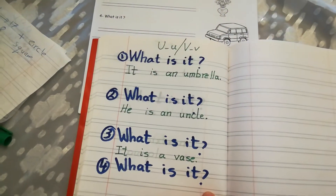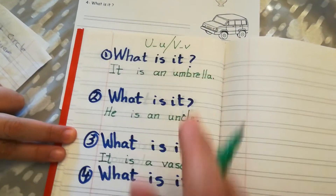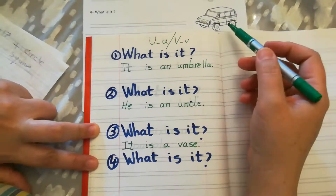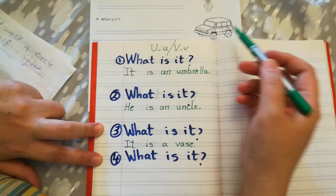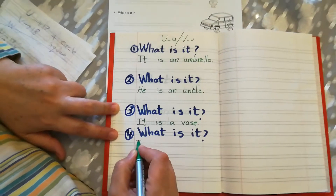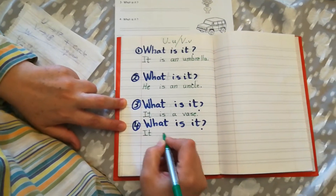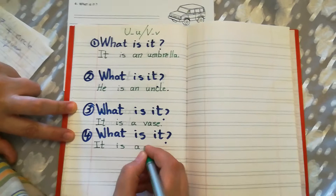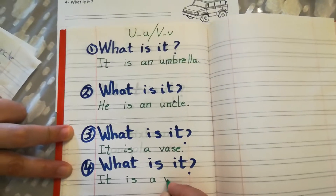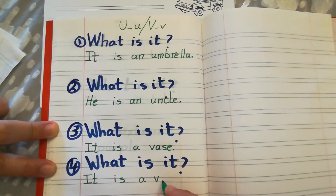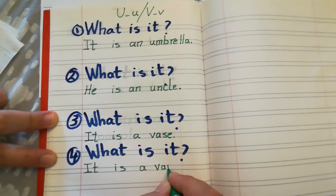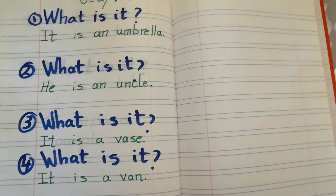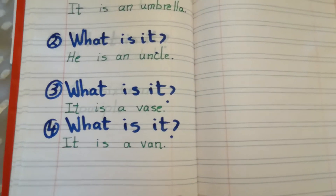Vase. It is a vase. Next, what is it? Van. It is a van. Let's write: it is a van. V, A, N. It is a van. Van.